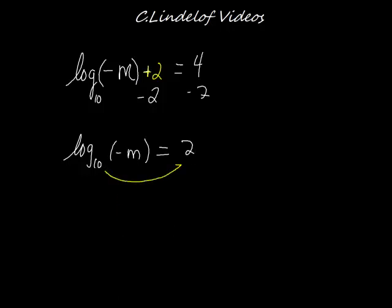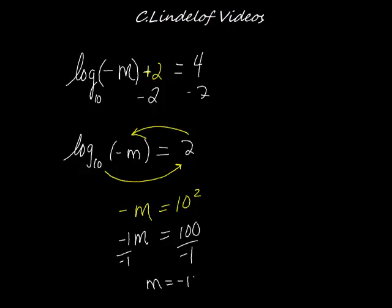10 to this power is equal to this thing. That gives us 10 squared, so 10 squared equals negative m. Sorry, I wrote in yellow there. So I'm going to go ahead and square 10. 10 squared is 100, 100 equals negative m. This is a negative 1 here, negative 1 here, negative 1 here. So this is how I'm going to get rid of this negative on this side. m equals negative 100.